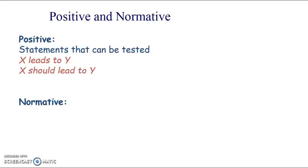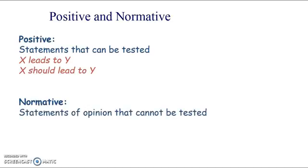We could also have statements that have the word 'should' in them. Lots of students think if it has the word 'should' in it, it becomes a normative statement, but don't be misled by that. You have to take the whole statement in context. 'X should lead to y' — we can definitely test that, and you could have a more definite statement like '80 percent of the time x will lead to y.' It's still a statement that can be tested, so don't discount something as normative just because it has the word 'should'.